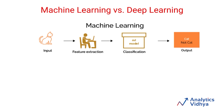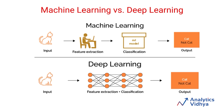Now let us see what happens if you were to build a deep learning model. In case of deep learning, the model takes care of the feature extraction and classification itself. So the model takes the input, figures out the features, and performs the classification to provide you with an output.